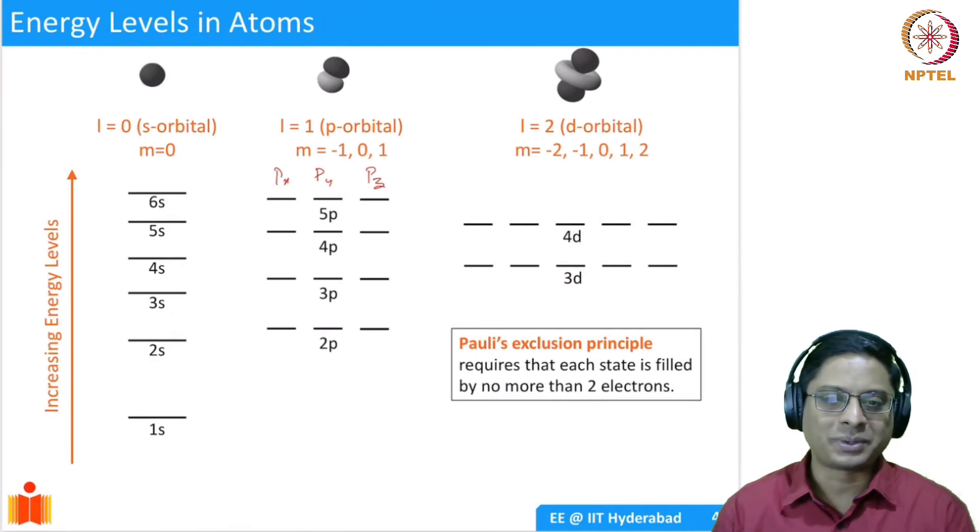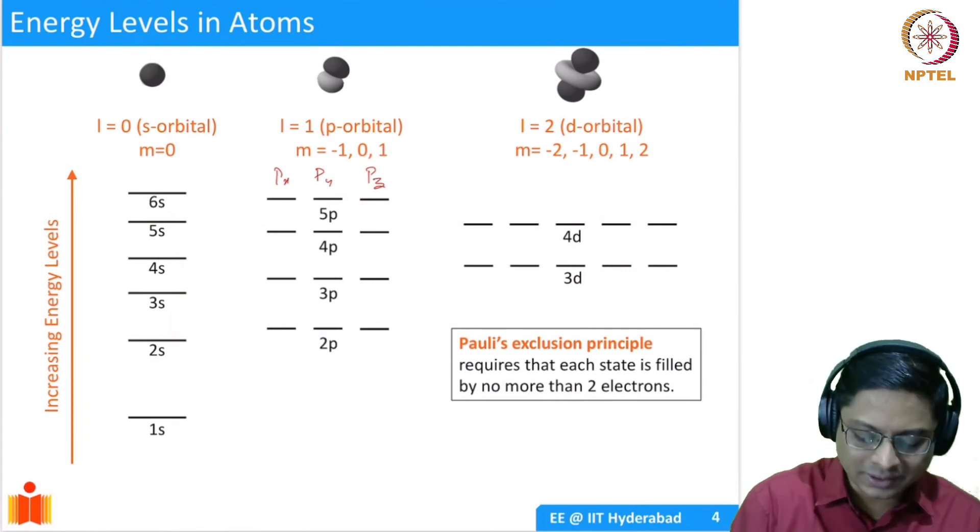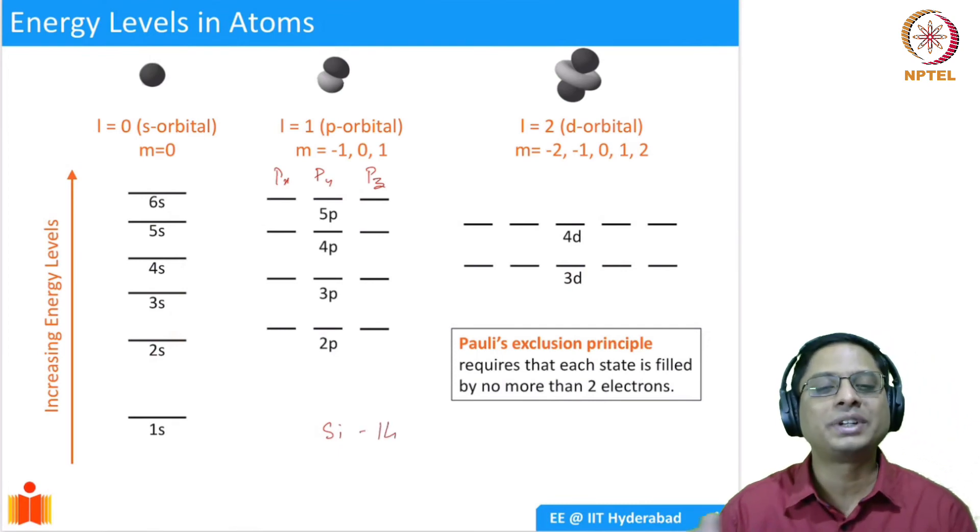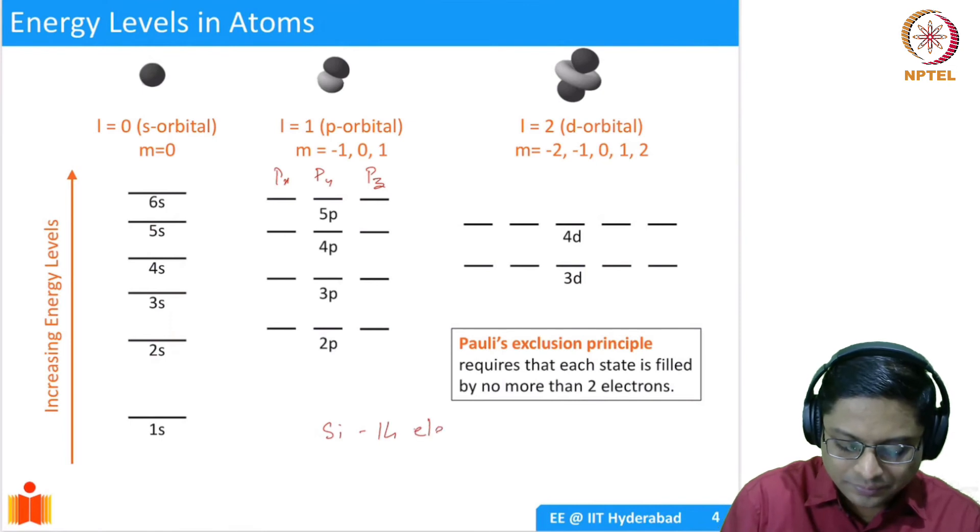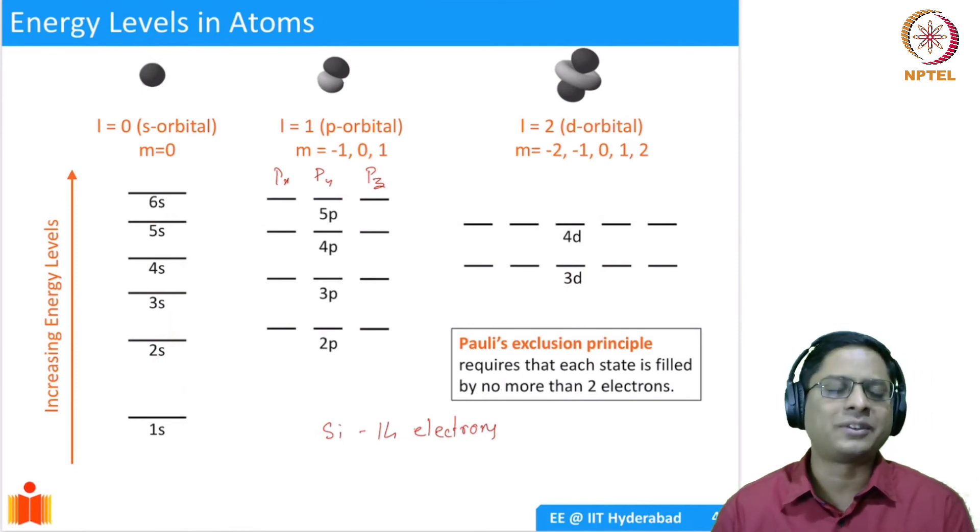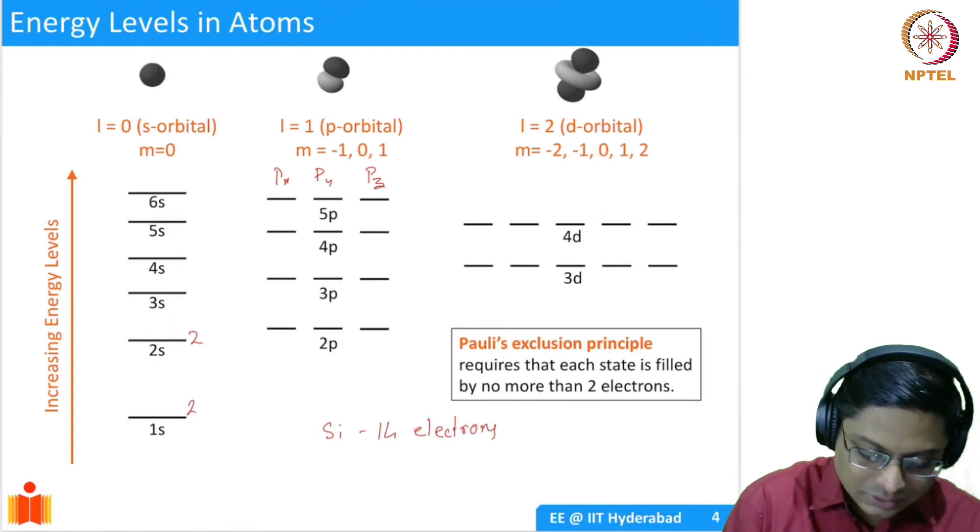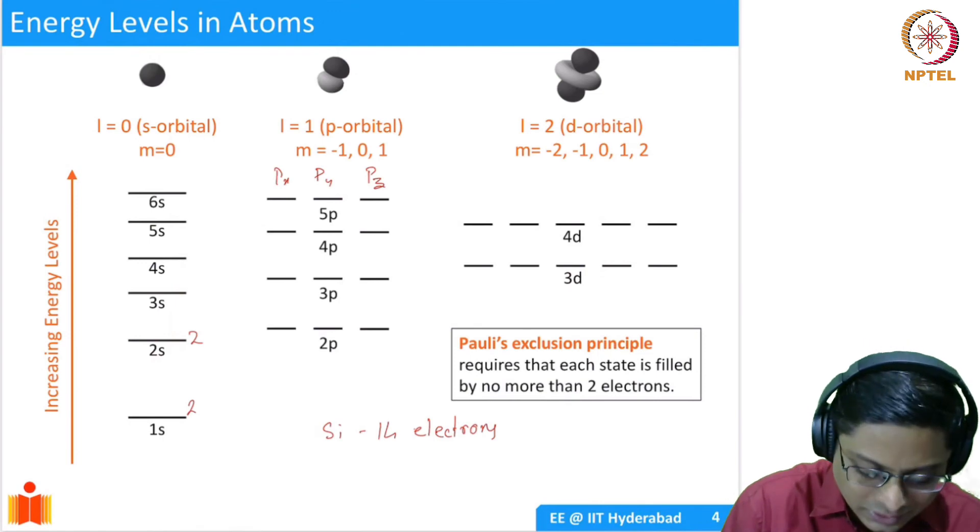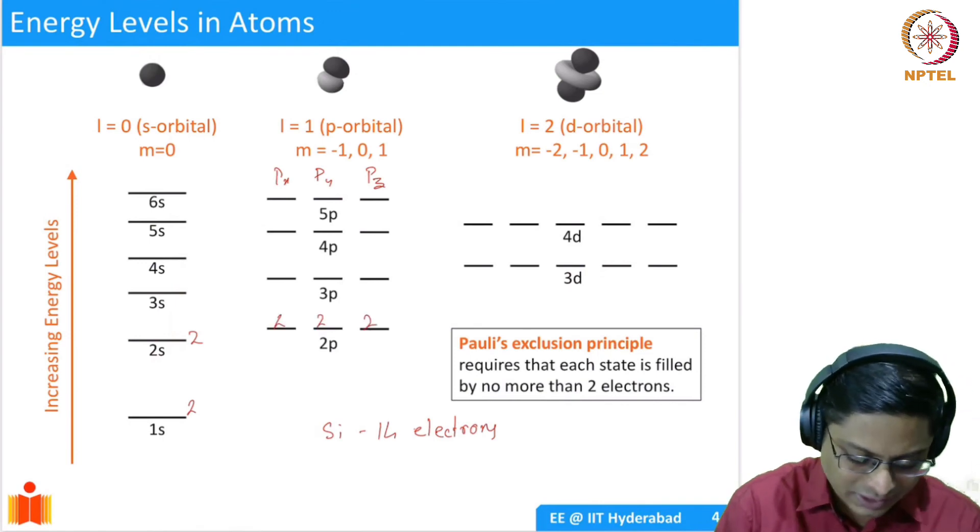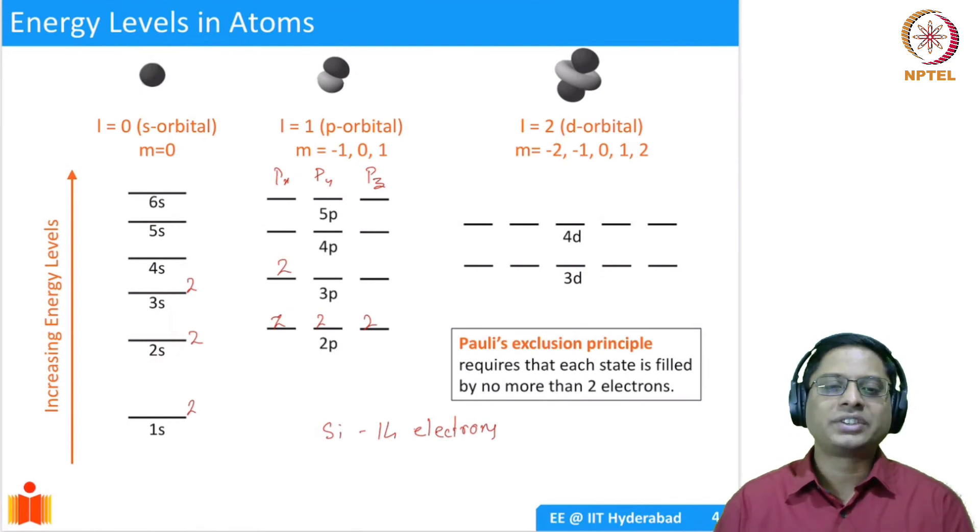We already know from Pauli's exclusion principle that each of these energy levels cannot be occupied by more than two electrons. At most, you have two electrons. You can have no electrons or one electron or two electrons at most. So how does this help us? If you think of silicon, take an example of silicon. Silicon has an atomic number of 14. That means it has 14 electrons. How are these electrons distributed? We start filling the states from the bottom, because the bottom-most levels have the highest probability of being filled. You can assign two electrons in the 1s state, two electrons in the 2s state,